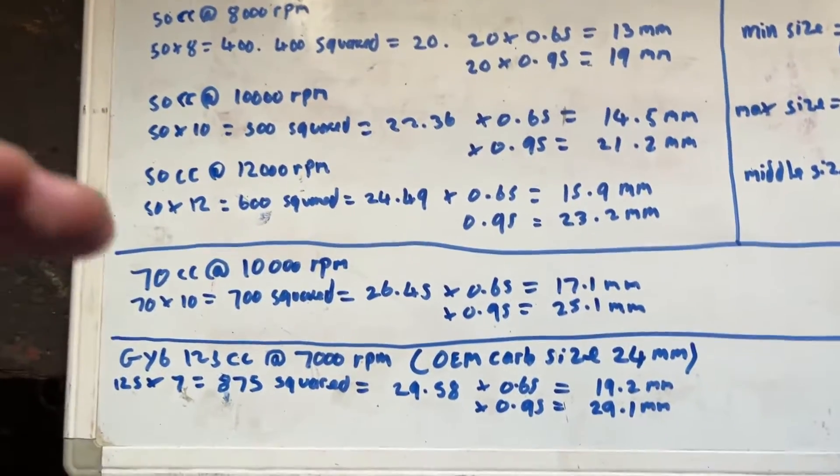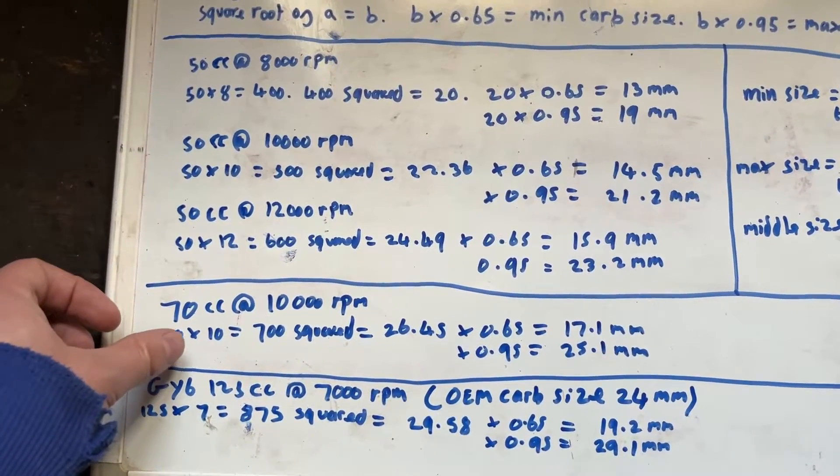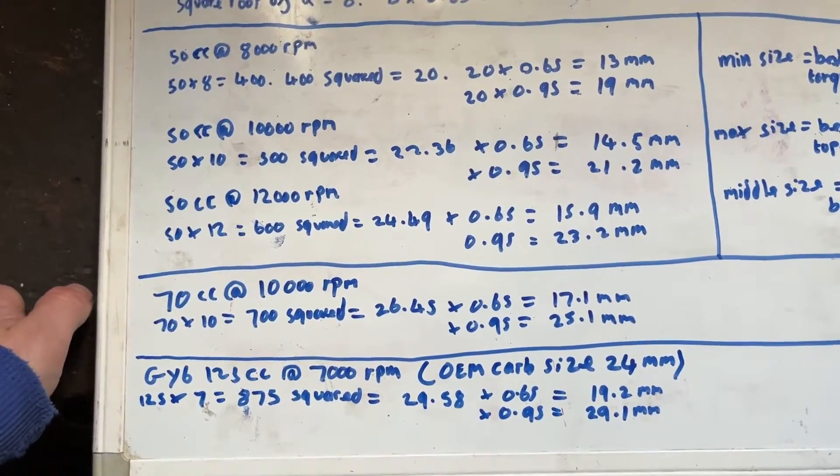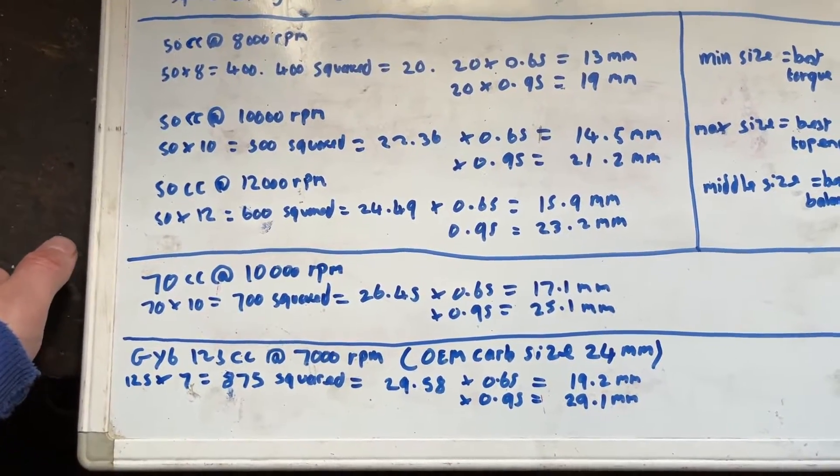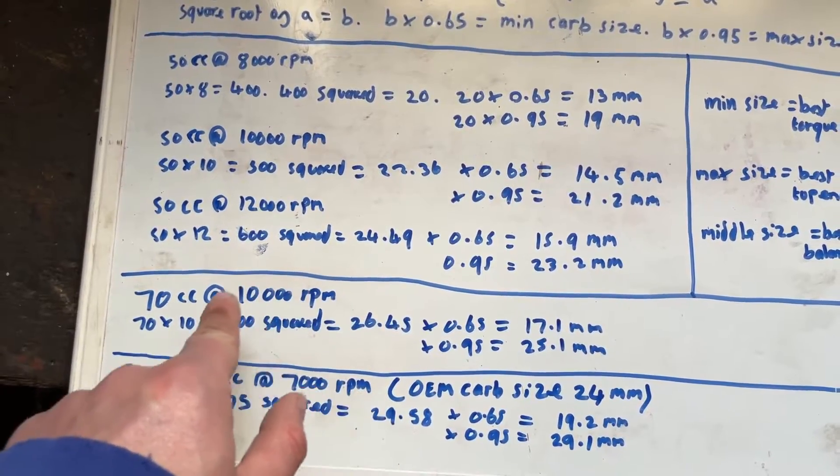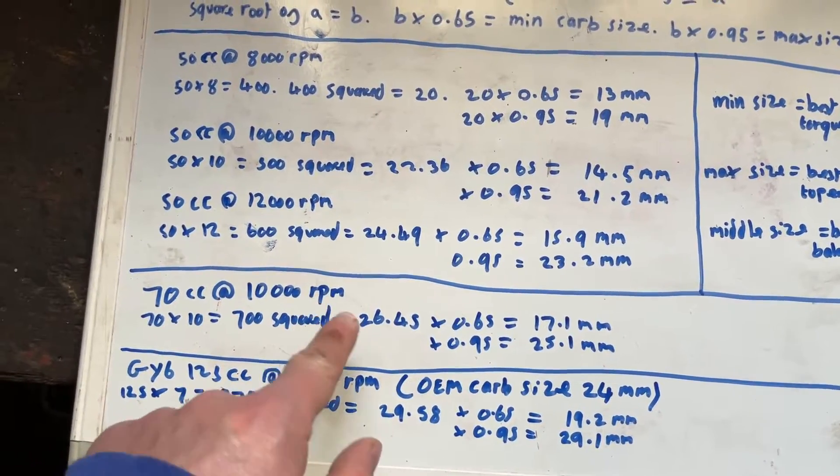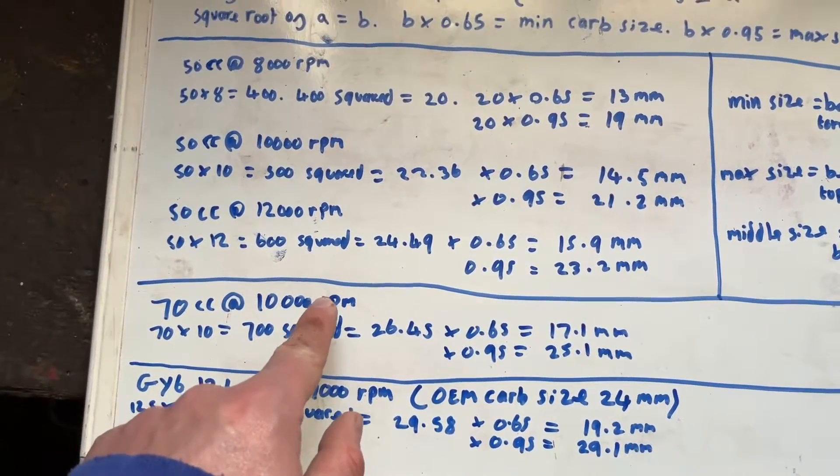So let's have a look at another example. This is our 70 kit. So what we have here is a 70cc cylinder kit, probably something like a Malossi Sport or a Polini Sport, like the road going sport cylinders. This RPM is just for an example, the actual RPM you will have to look up. But let's say for example it runs at 10,000 RPM.